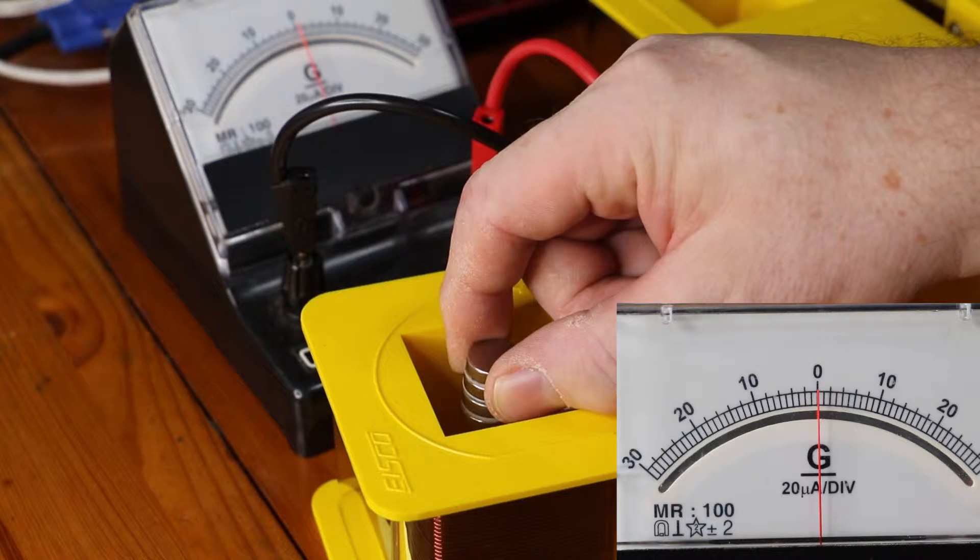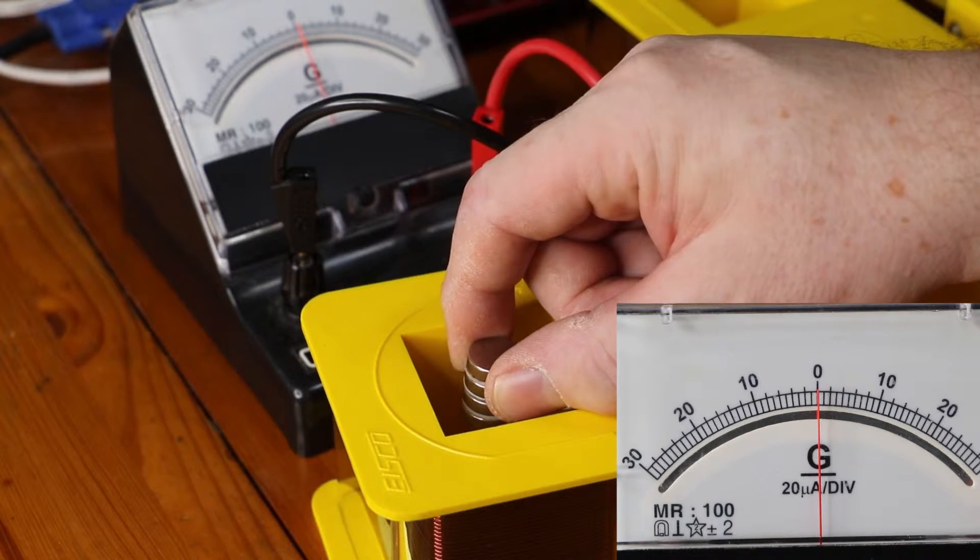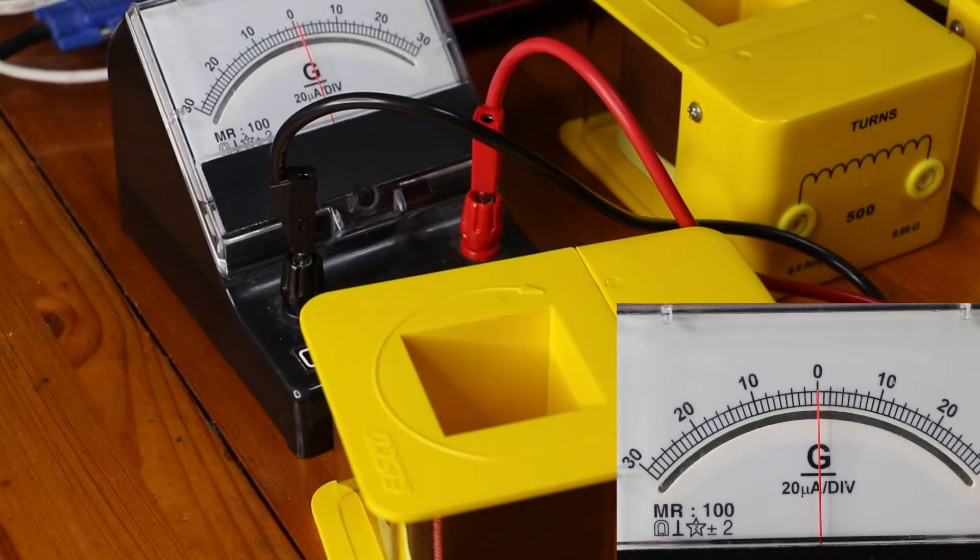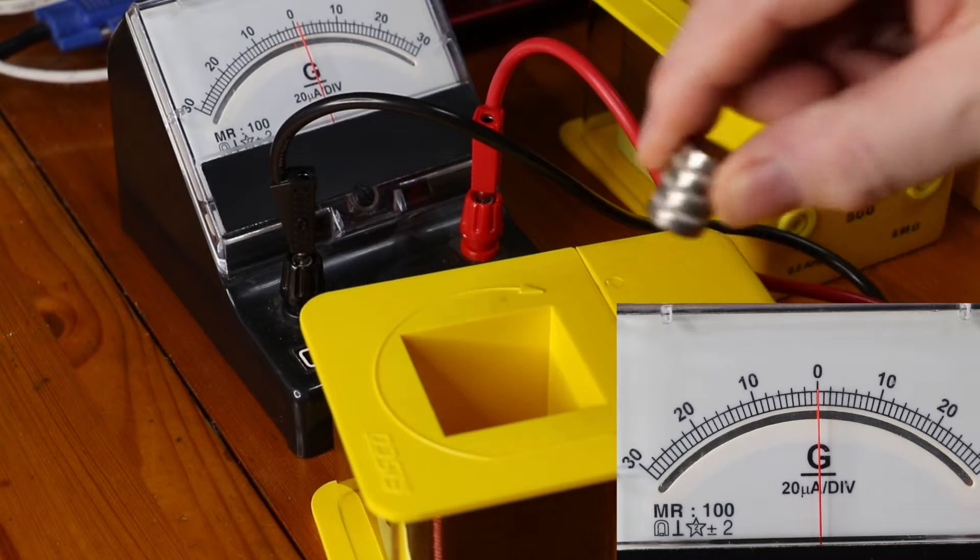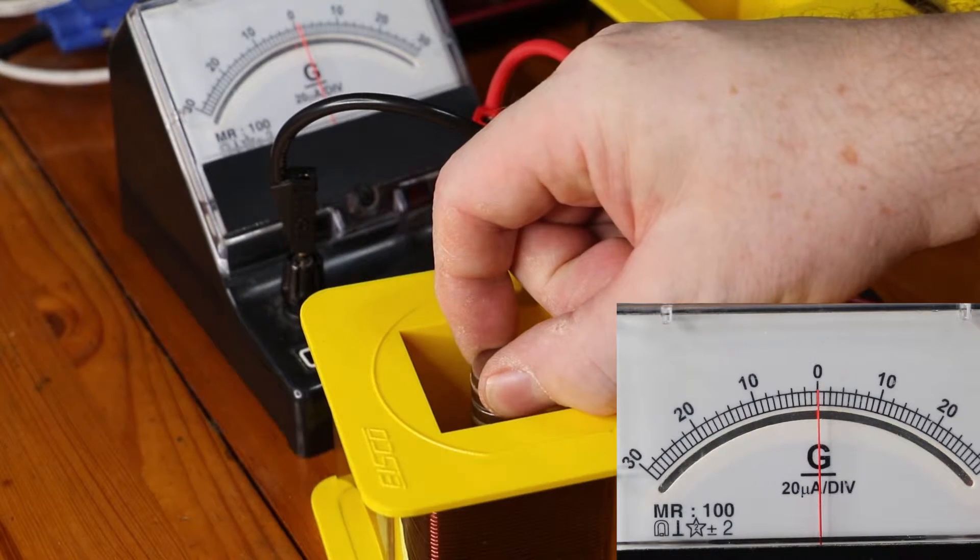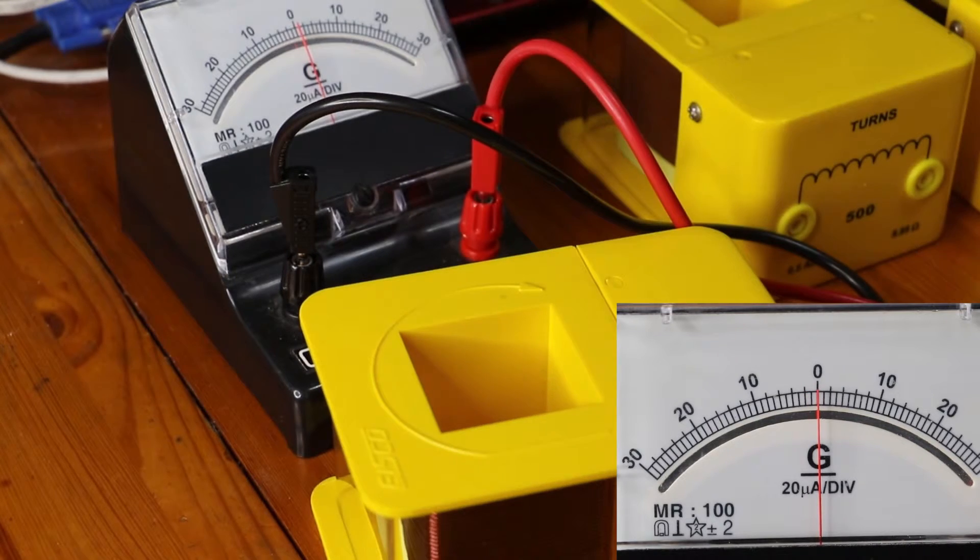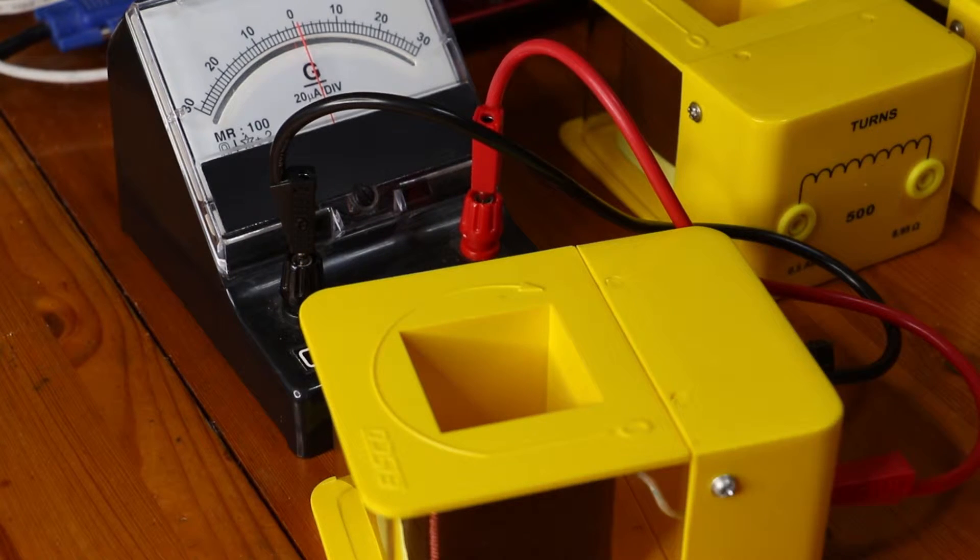I keep it still and there's no movement on the galvanometer. I'm going to pull it out and we can see that it moves the other way. Let's put it in quickly. We have a bigger deflection to the right. I pull it out quickly and I have a bigger deflection to the left.